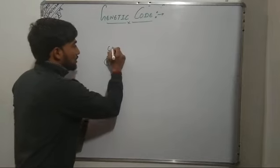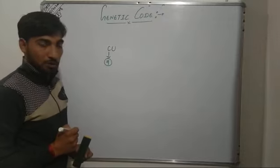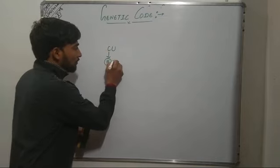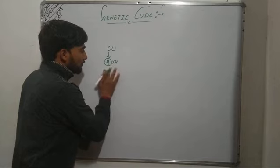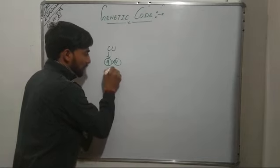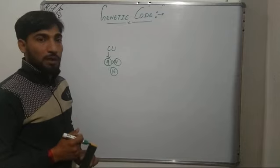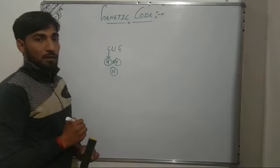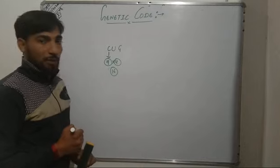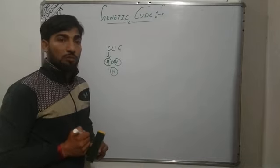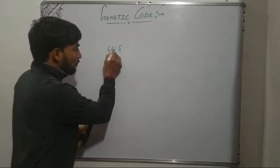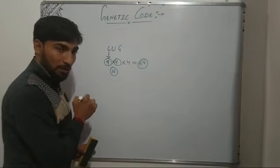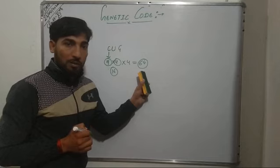If we say that a sequence of 2 nitrogenous bases or nucleotides codes for one amino acid, then 4 × 4 gives a total of 16 amino acids, which is also an inadequate number as we have 20 amino acids. If we say that a sequence of 3 nitrogenous bases codes for one amino acid, then 4 × 4 × 4 gives us a total of 64 — and this is an adequate number.